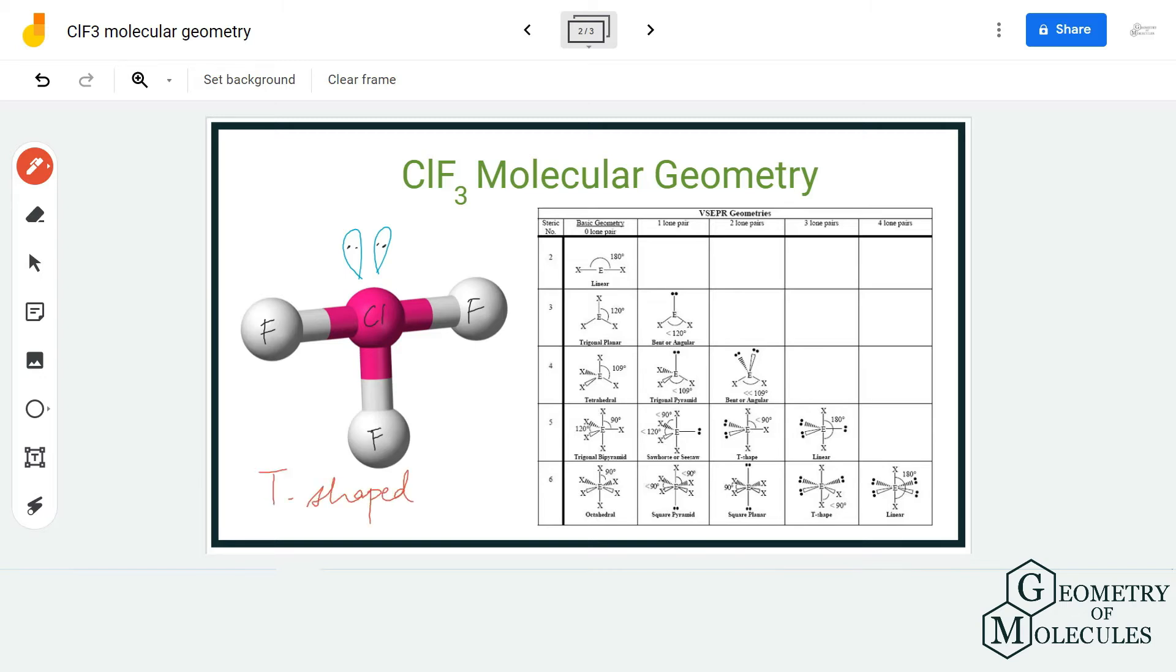But to confirm it, you can either use steric number or you can use the AXE notation method to confirm the molecular geometry of ClF3. Here we are going to use the steric number formula to see if T-shaped molecular geometry is the right answer for ClF3.